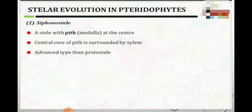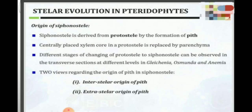Now we see the second type of stele, that is siphonostele. This is a modification of protostele. A stele in which the protostele is medullated is called siphonostele. It is a more advanced type than the protostele. Now, the origin of siphonostele.